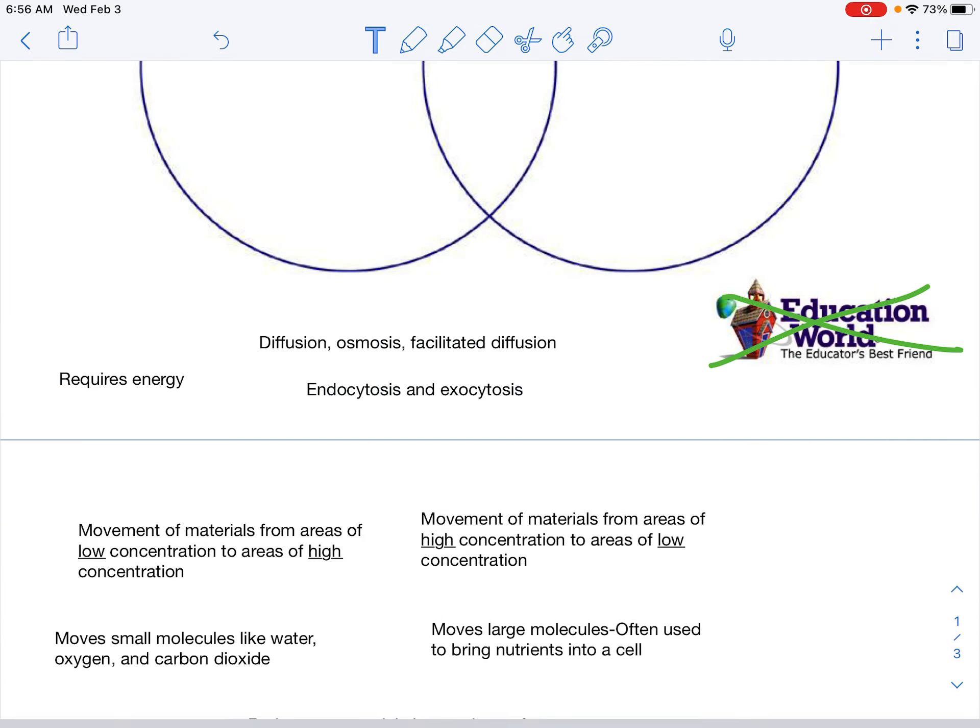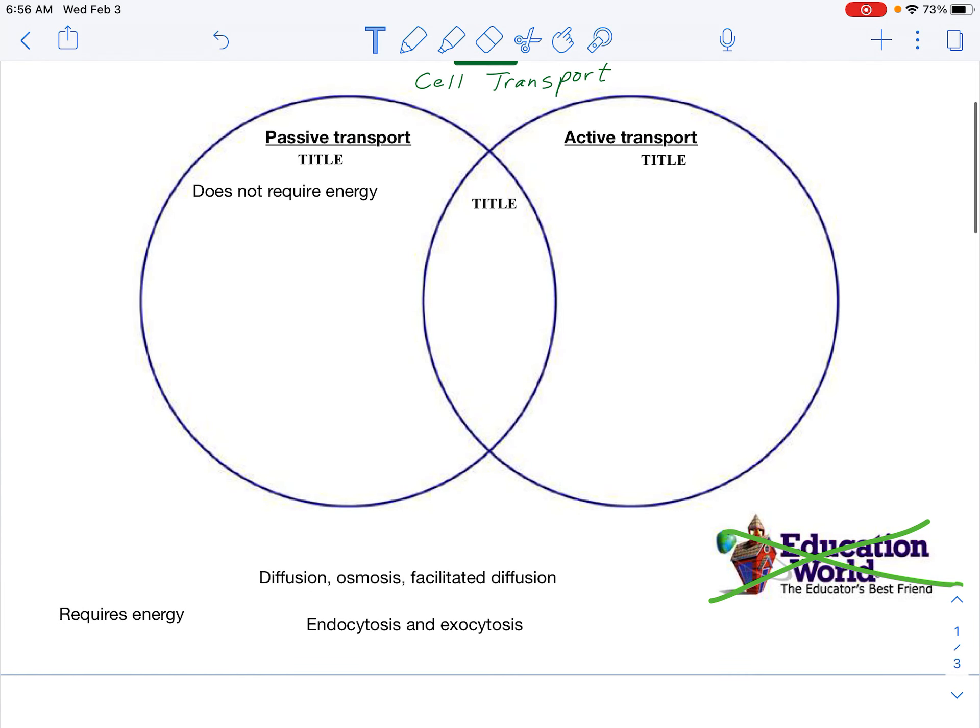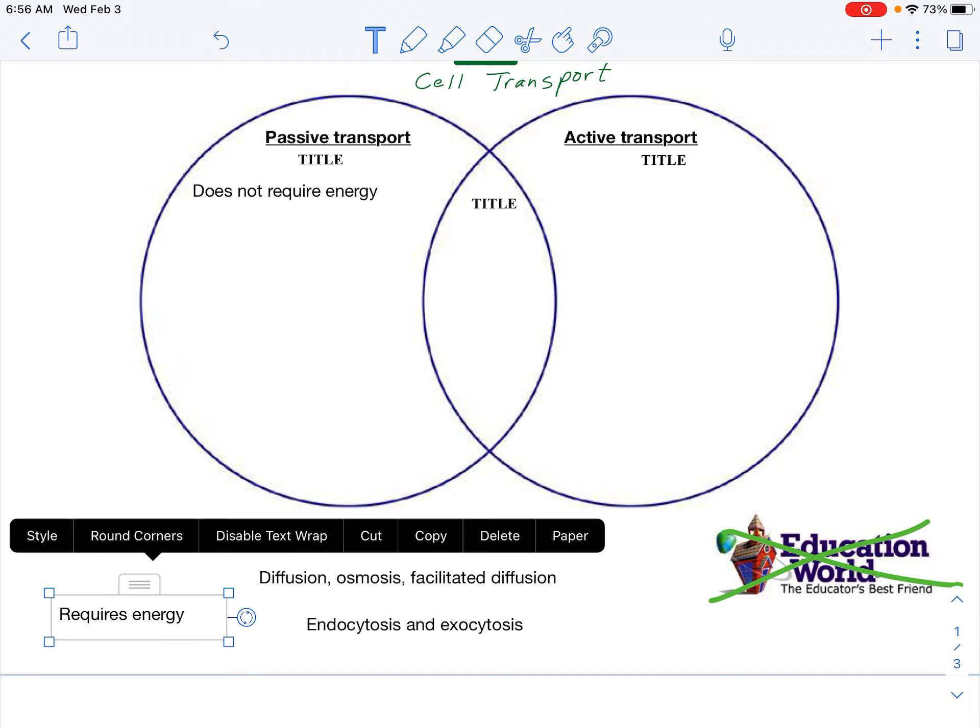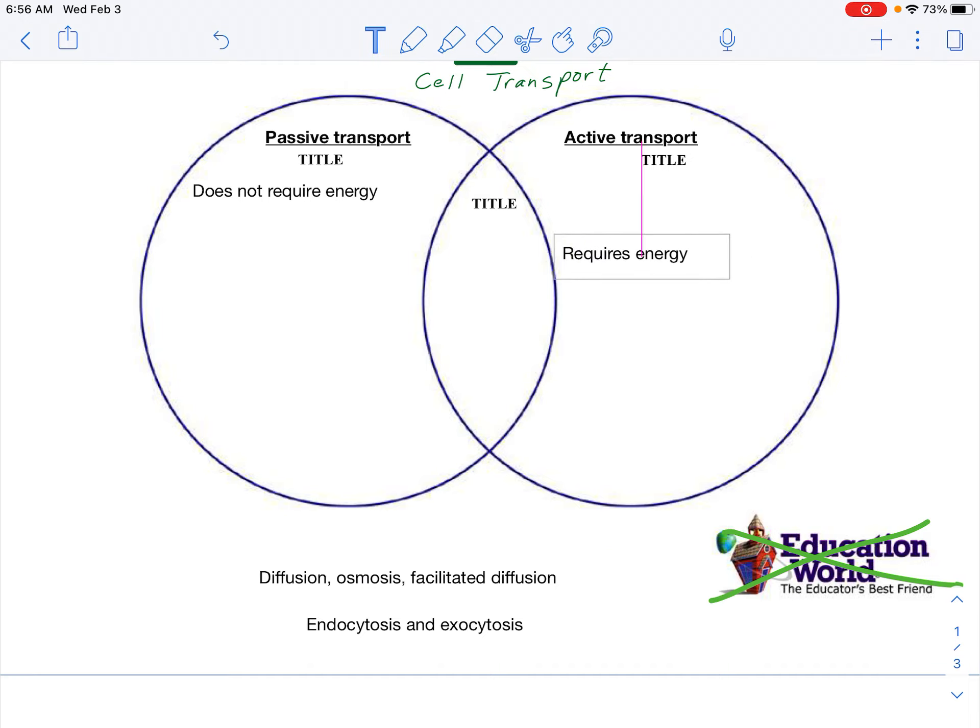Active transport does require energy from the cell, just like when you are active it requires energy. So you would simply highlight that box and drag it into the active transport side just like that.